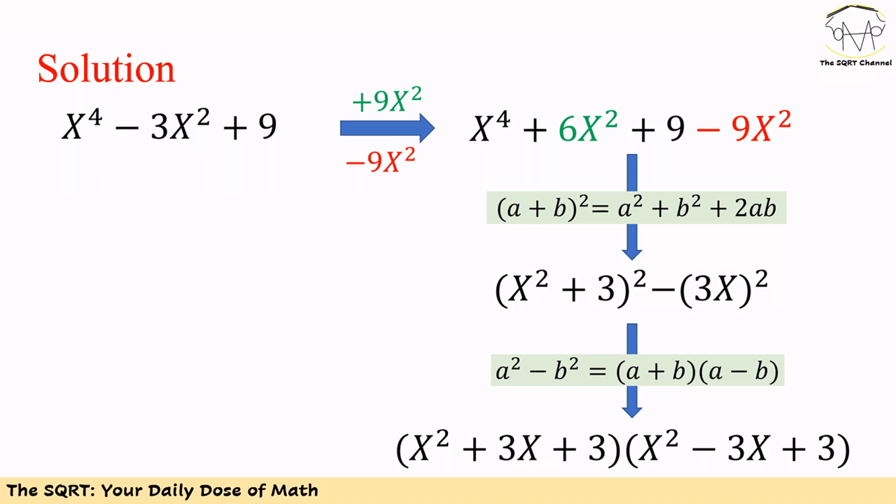Now we are going to use the identity (a + b)² = a² + b² + 2ab. Applying this identity to simplify the expression, we end up with (x² + 3)² minus (3x)².